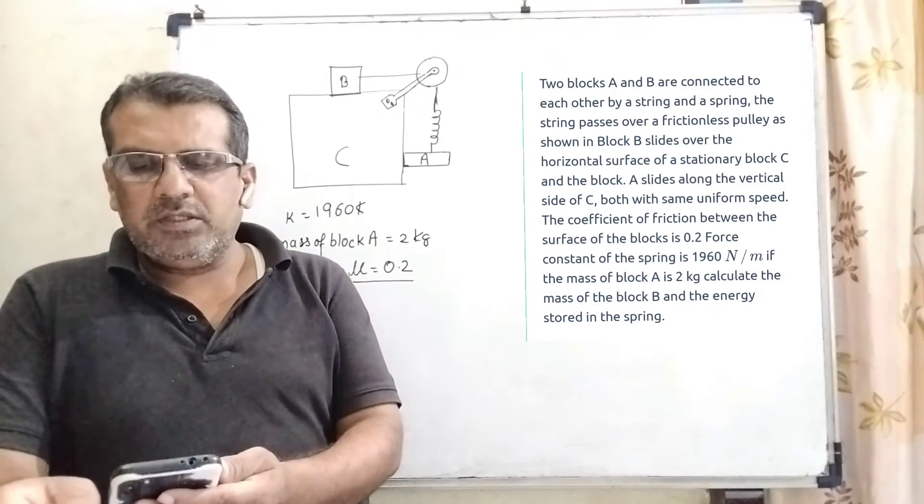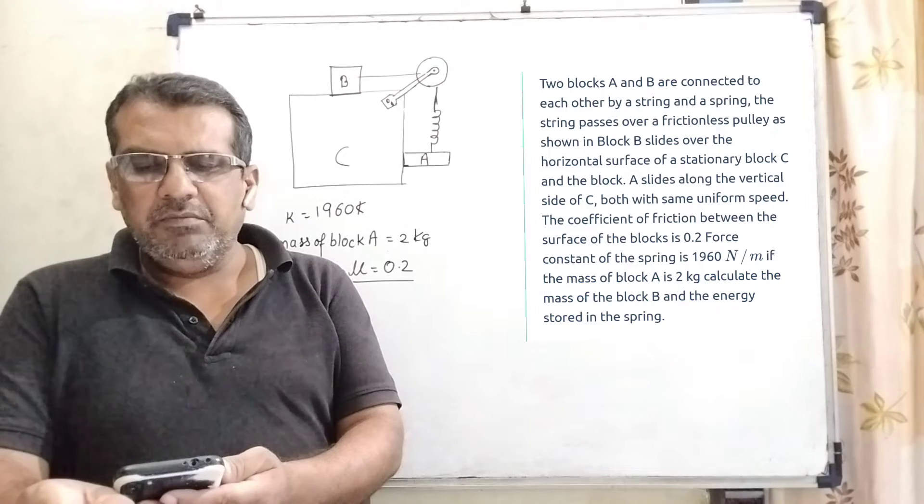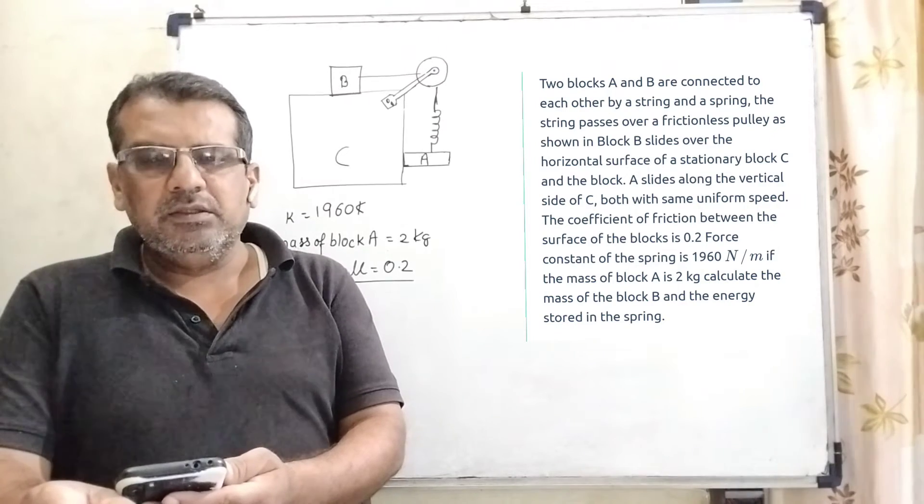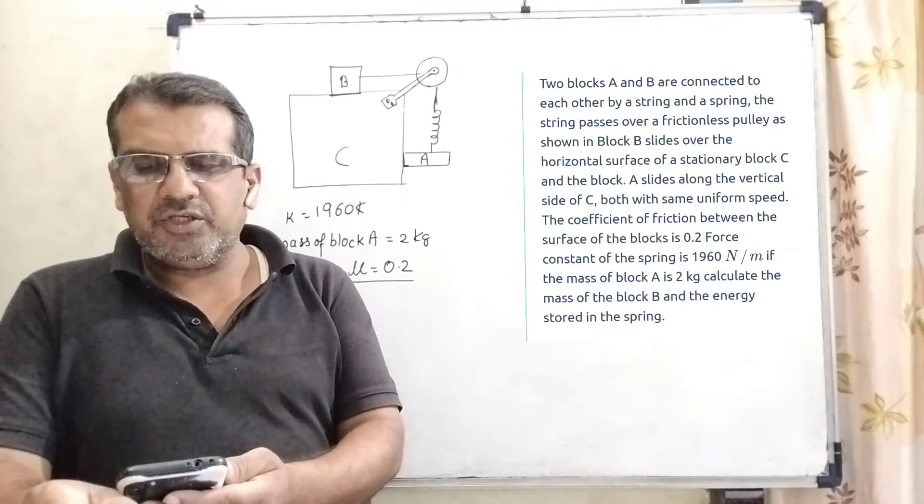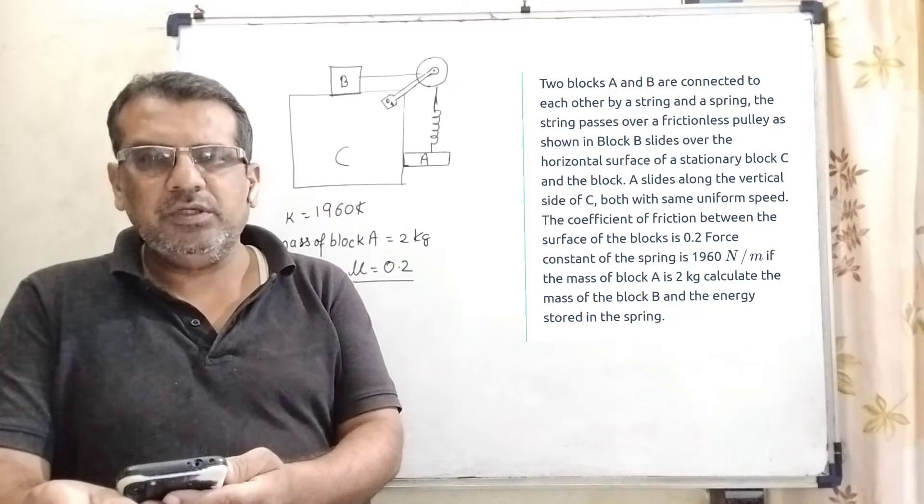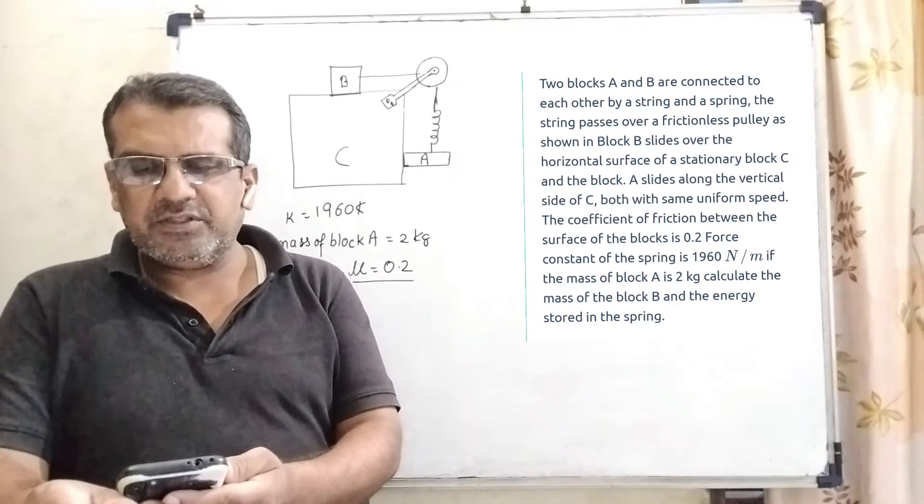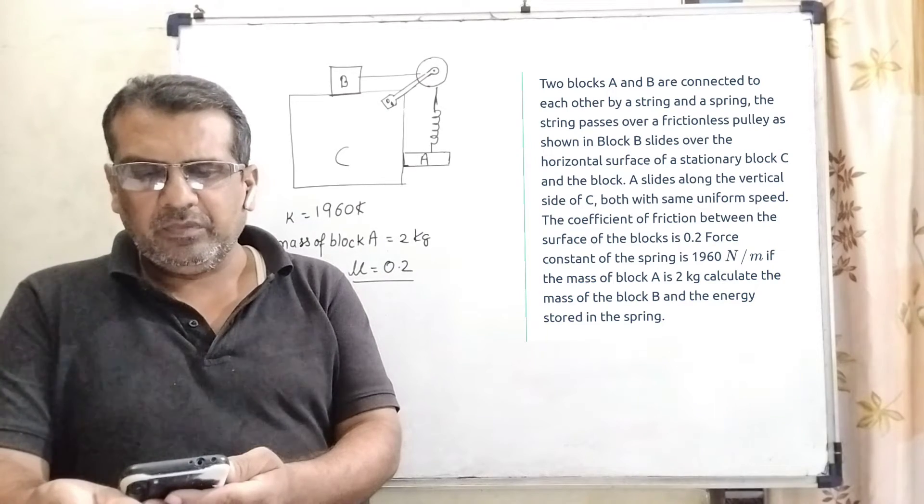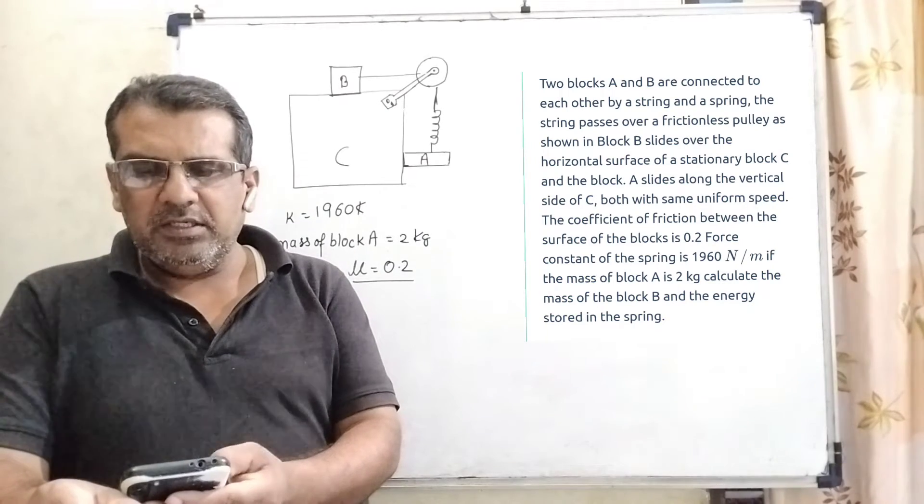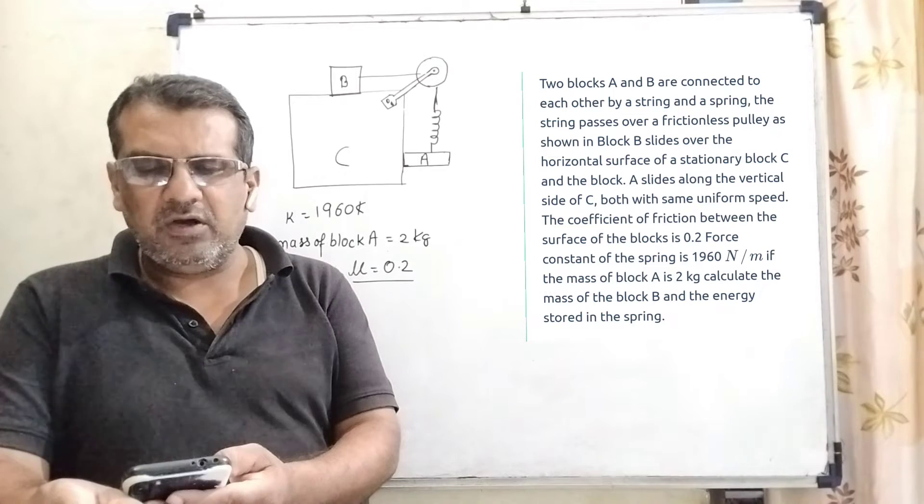Now here is the question. Two blocks A and B are connected to each other by a string. The string passes over a frictionless pulley as shown. Block B slides over the horizontal surface of stationary block C, and block A slides along the vertical sides of C.